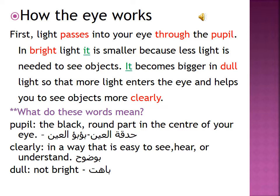Look at the question underneath: what do these words mean in English? We have 'pupil' — the black round part in the center of your eye — حدقة العين أو بؤبؤ العين. 'Clearly' means in a way that is easy to see, hear, or understand — بوضوح. The last word is 'dull' — dull means not too bright — باهت.